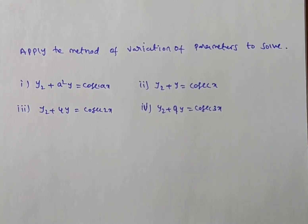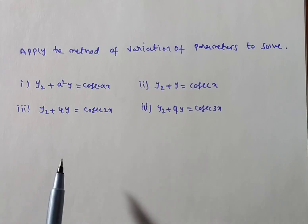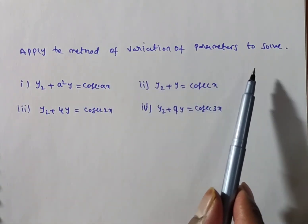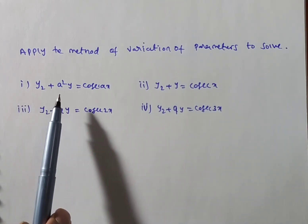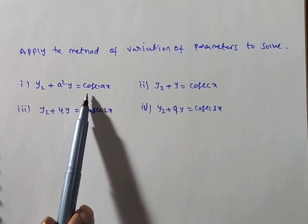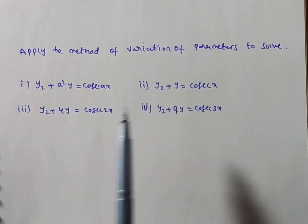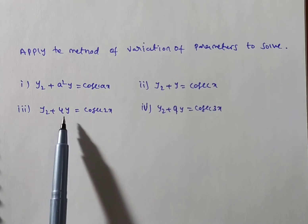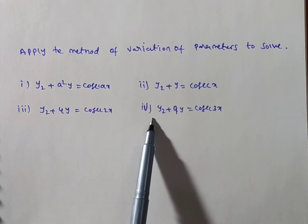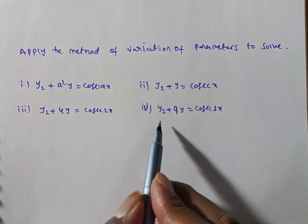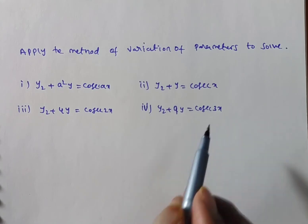Hi friends, in this video we are discussing a problem on method of variation of parameters. The given problems are: first, y'' + a²y = cosec(ax); second, y'' + y = cosec(x); third, y'' + 4y = cosec(2x); and fourth, y'' + 9y = cosec(3x).